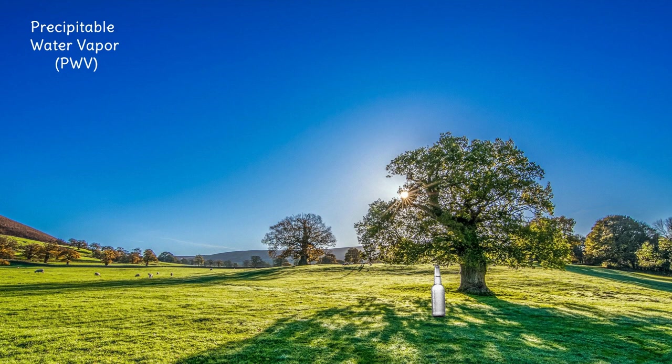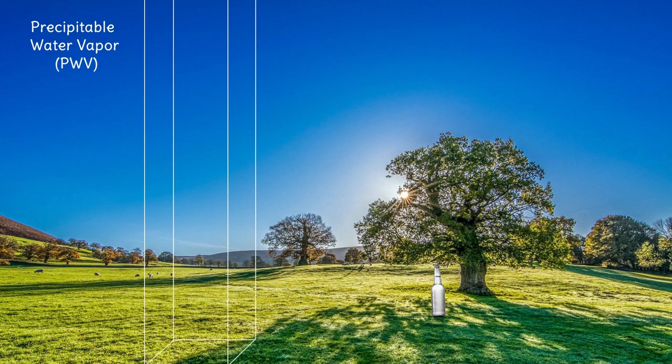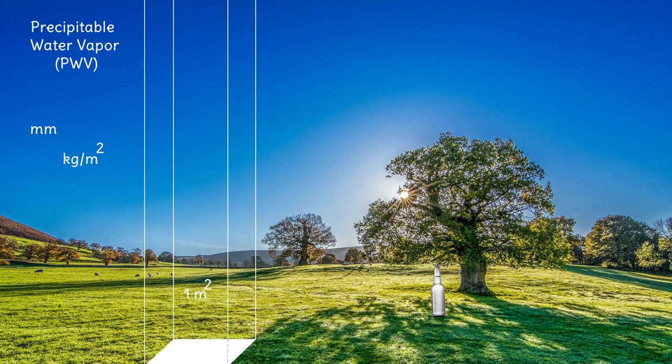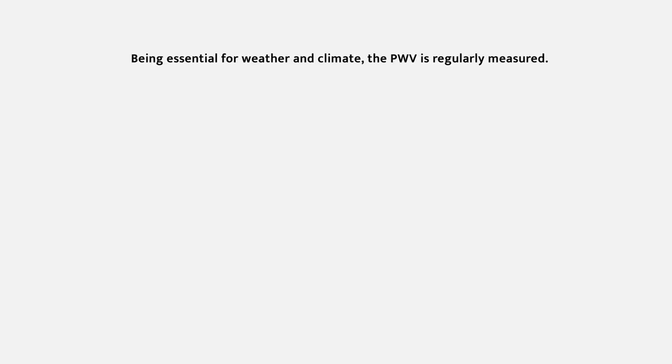Precipitable water vapor (PWV) is the amount of water that would result from condensing a column of humid air with one square meter cross-section that extends from the surface to the top of the troposphere. It is measured in millimeters or kilograms per square meter. Being essential for weather and climate, the PWV is regularly measured.